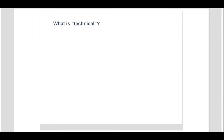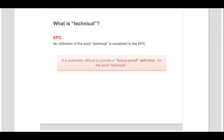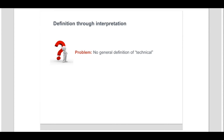The word 'technical' has been mentioned frequently but no definition of what it means has been given. Intentionally, there is no definition of the word 'technical' in the EPC. Indeed, it is extremely difficult to provide a future-proof definition for the word 'technical' that would be valid across all fields of technology. Rather than attempt a general definition, in this grey area requiring interpretation, it is EPO practice to stake out its meaning through individual Boards of Appeal decisions.